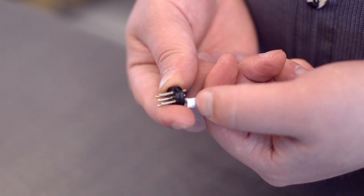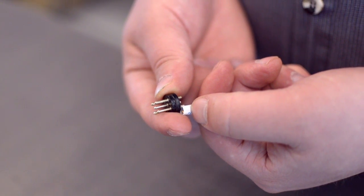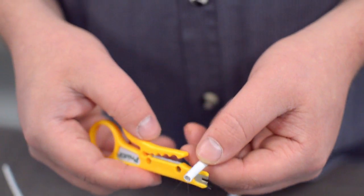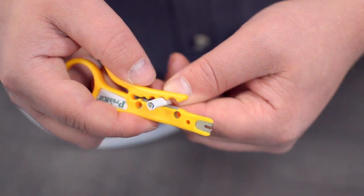Measure how far you will need to strip back the jacket by holding the cable up against the base of the connector. Then, strip the cable jacket using the wire strippers.